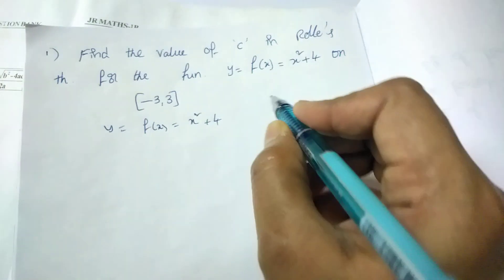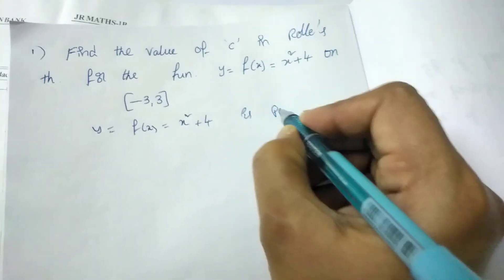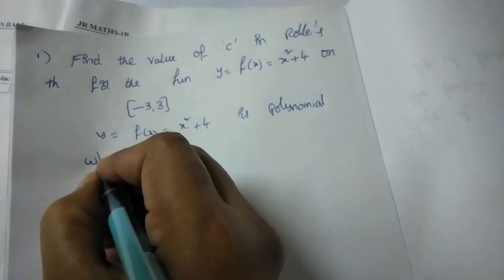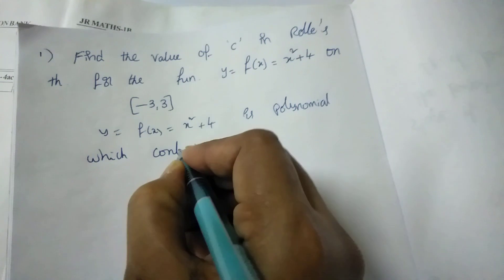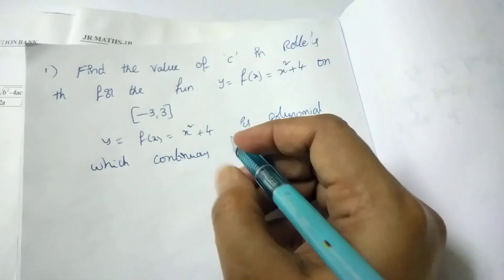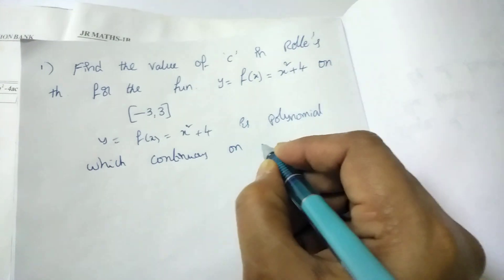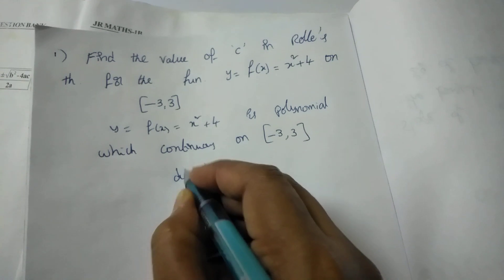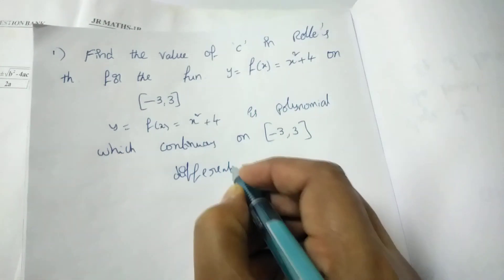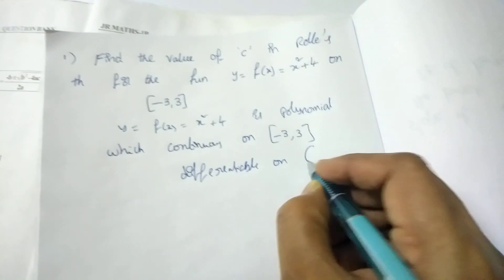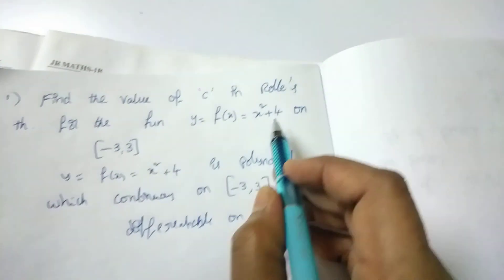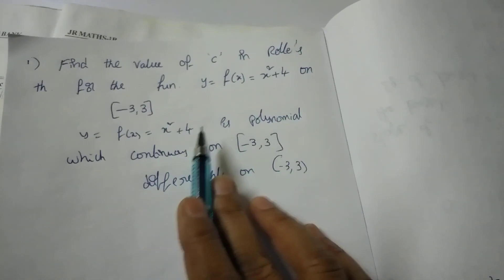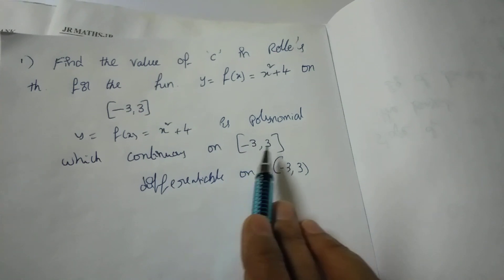Since it is a polynomial, it is continuous on the closed bracket [−3, 3] and differentiable on the open bracket (−3, 3). Any time a function and interval are given, you must write that the function is continuous on the closed interval and differentiable on the open interval.